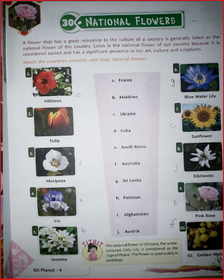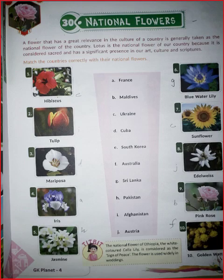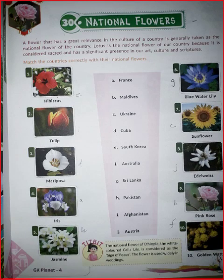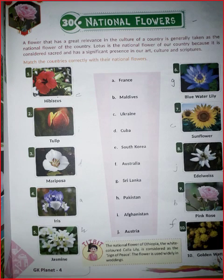Pink rose is the national flower of which country? Pink rose is the national flower of Maldives. Golden wattle is the national flower of which place? Australia. The national flower of Australia is golden wattle.